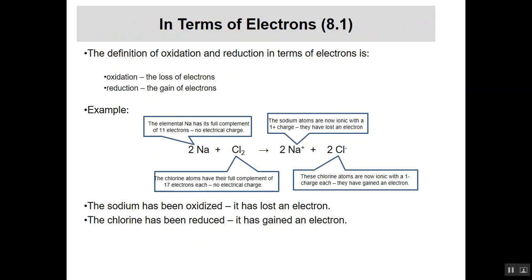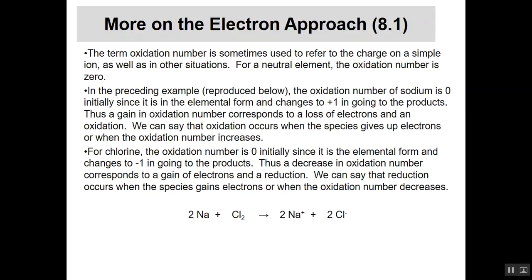We would say sodium has an oxidation number of plus one, and the chloride has an oxidation number of minus one. If an element has zero for an oxidation number and ends up with a charge, it becomes whatever that ion's charge is. Notice that sodium went from zero to plus one, meaning it lost an electron — it's been oxidized. Chlorine went from zero to minus one, so it has been reduced.